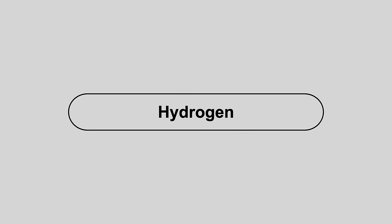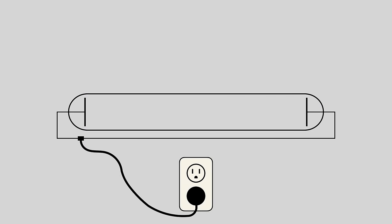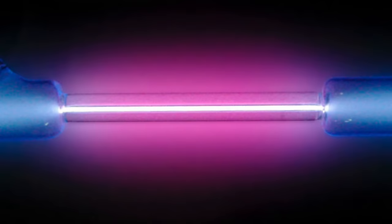If you put some hydrogen in a tube and pass an electric current through it, it glows pink. Here's what it looks like in real life. This color is made up of a bunch of different wavelengths, which we can separate out using a prism.